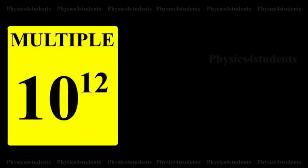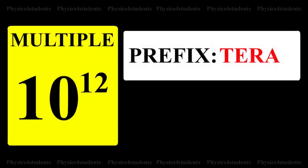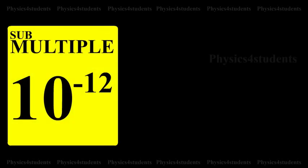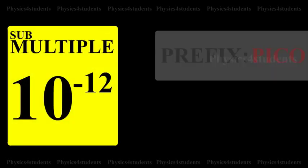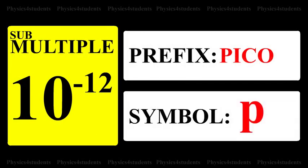10 raised to 12: prefix is Tera, symbol is T. Submultiple is 10 raised to minus 12: prefix is Pico, symbol is P.